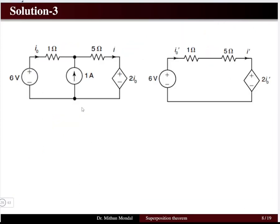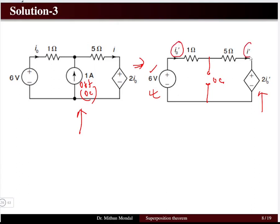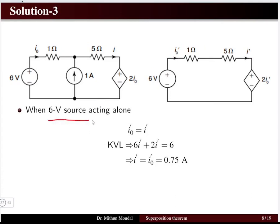For case 1, I keep the 6 volt source active and replace the 1 ampere current source with an open circuit. The dependent source remains untouched. Solving this series circuit using KVL — the current through the 1 ohm and 5 ohm resistors in series will be the same — I apply Kirchhoff's voltage law in this mesh to find the total current in the network and obtain I dash and I0 dash when the 6 volt source is acting alone.